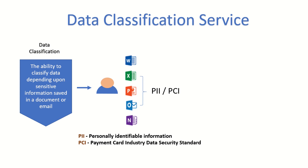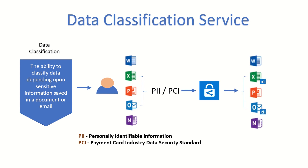But if your enterprise doesn't have any classification solution implemented, there is no classification available, and your enterprise would not even know how many sensitive documents are getting generated on a daily basis. With the help of Azure Information Protection, users can be notified that the email they are going to send contains sensitive information and needs to be classified. Getting classification done organization-wide is really important so that you know what kind of sensitive information is being generated on a daily basis and in what quantity.